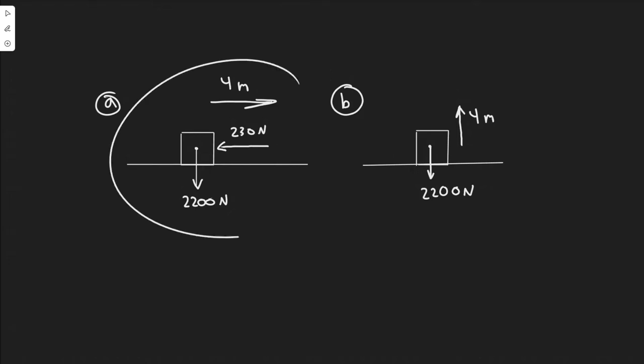So we have two different cases here. One where there's a 230 newton drag force and we're going to be pushing it 4 meters. And then in B, we have the crate on the floor and we're going to be pushing it 4 meters in the air.